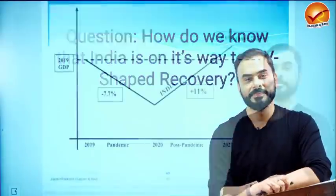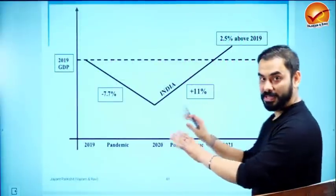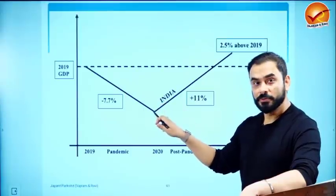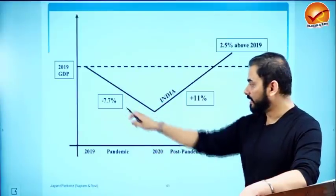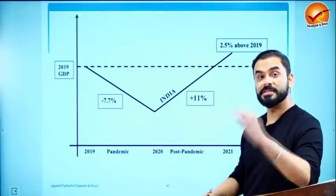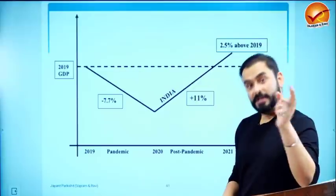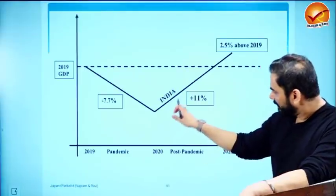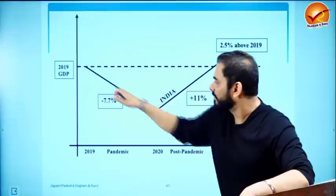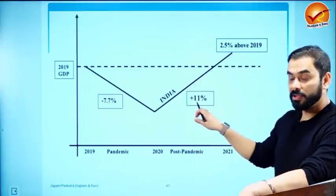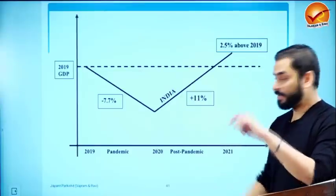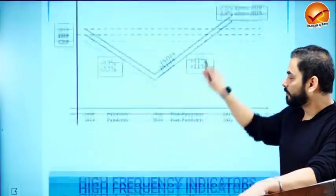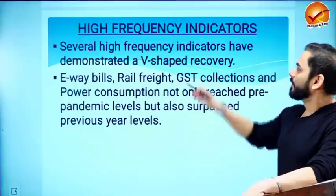Now, how do we know India is on its way to a V-shaped recovery? India's GDP contracted by minus 7.7% overall in 2020. The Economic Survey says India is now recovering at about 11%, forming a V shape — we came down sharply and are now going up sharply. The question is: is this actually happening? Let's examine using indicators.